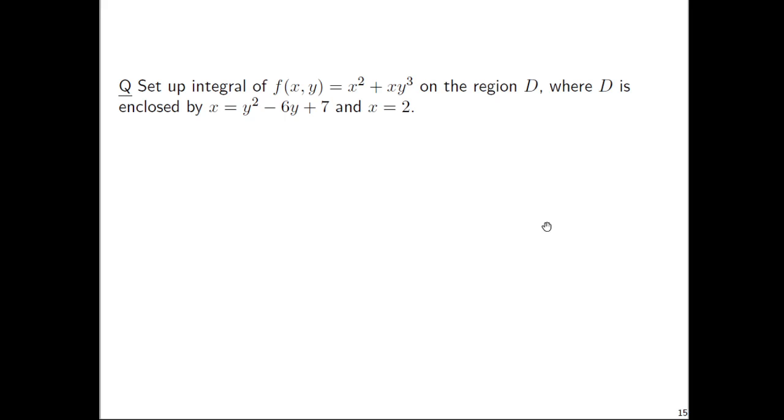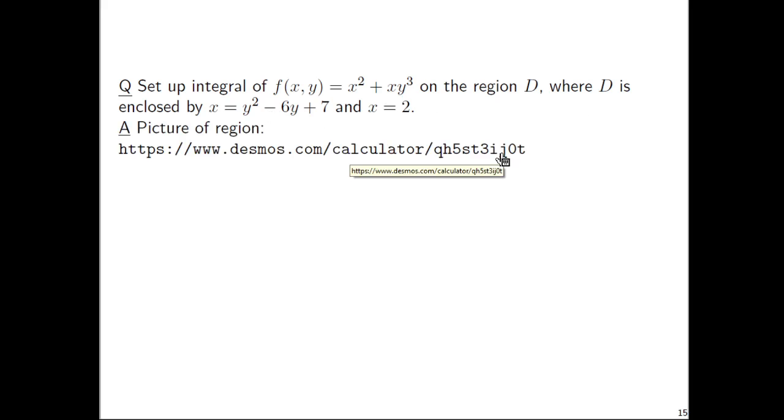So let's set up the integral of f(x,y) = x² + xy³ on the region D, where D is enclosed by x = y² - 6y + 7 and x = 2. Now, the first thing, x = y² - 6y + 7, that's a parabola that's sideways, right? And x = 2 is a vertical line. So let's just grab a picture of this.